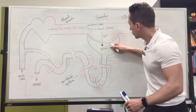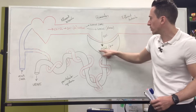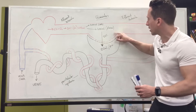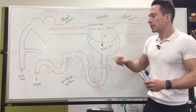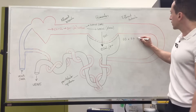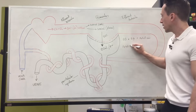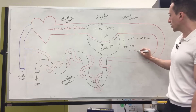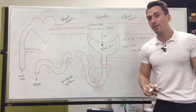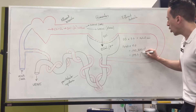So every minute, 120 milliliters of fluid is being filtered into the renal capsule. Let's think about how much is being filtered per day. If we've got 60 minutes in an hour times 24 hours in a day, that gives us 1,440 minutes. If we multiply 1,440 minutes by 120, that gives us around 172,800 milliliters. So every day we filter into our nephrons 172,800 mils — let's round that up to 173 liters per day.